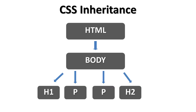We'll use the code from the last video. You'll remember that we embedded four elements inside our body element — two paragraph elements and an h1 and h2 element — so those are nested within the body element. That's the hierarchy: it goes from the HTML root element to the body element and to any elements we put inside the body.